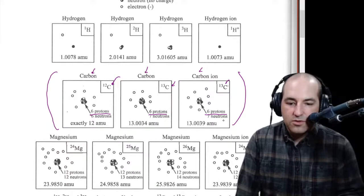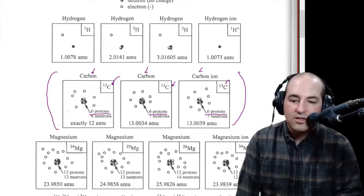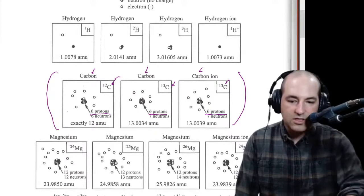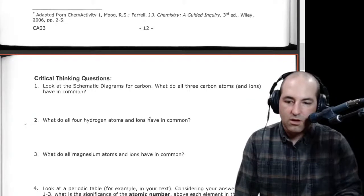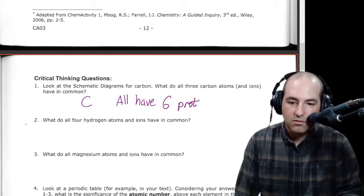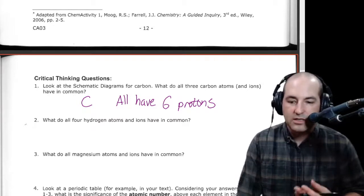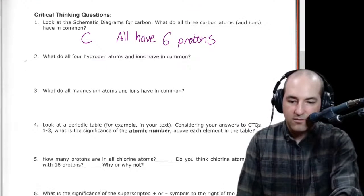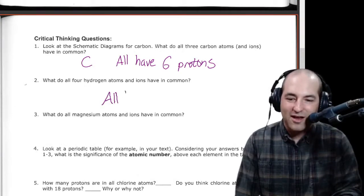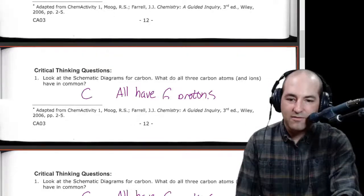So you'll notice they have different numbers of neutrons. They have different AMUs. They have different of these electrons floating around here. These two have six, and this one has seven. They have slightly different numbers up here, and we're going to get into all that stuff. But for now, we can just say that they all have six protons, and they all have Cs in the word carbon. So they all have a C, and they all have six protons.